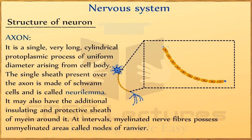Axon: It is a single, very long cylindrical protoplasmic process of uniform diameter arising from the body of the cell. The axon conducts nerve impulse away from the cell body. The sheath covering the axon is made up of Schwann cells and is called neurilemma. It may also have an additional insulating and protective sheath of myelin around it. At intervals, myelinated nerve fibers possess unmyelinated areas called nodes of Ranvier.